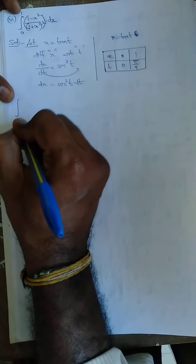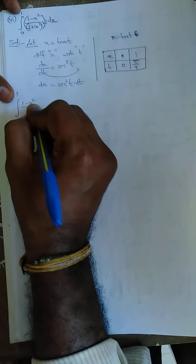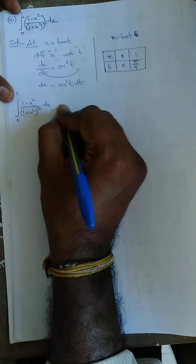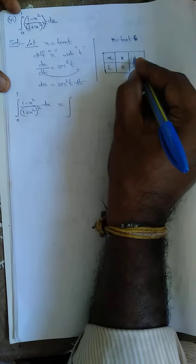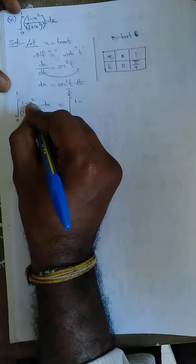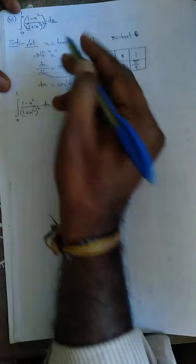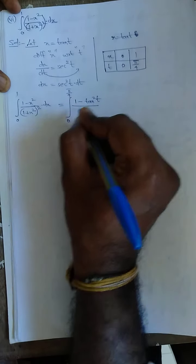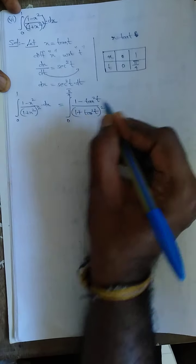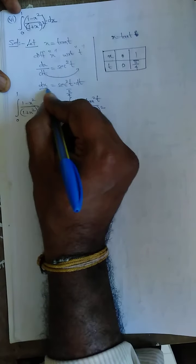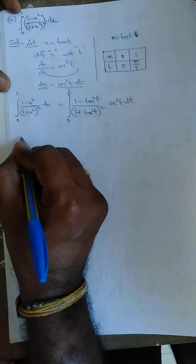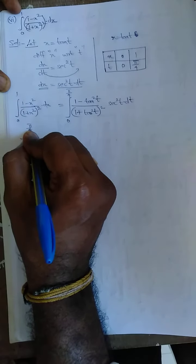Integration from 0 to 1 of (1 minus x square) divided by (1 plus x square) the whole square into dx, is equal to integration from 0 to pi by 4. Here 1 minus x square becomes 1 minus tan square t, divided by 1 plus tan square t the whole square. dx is secant square t into dt.